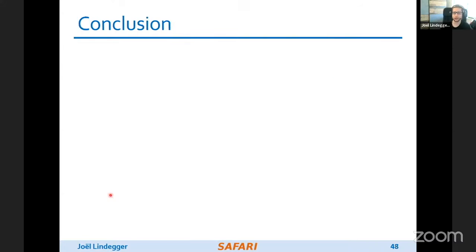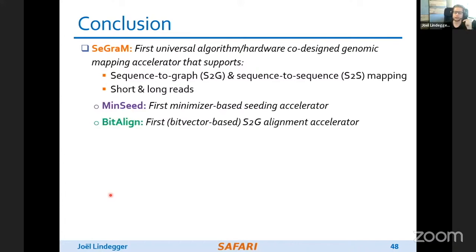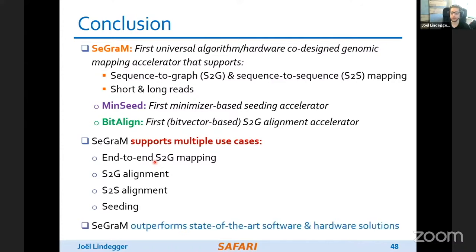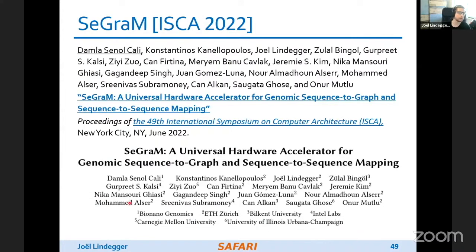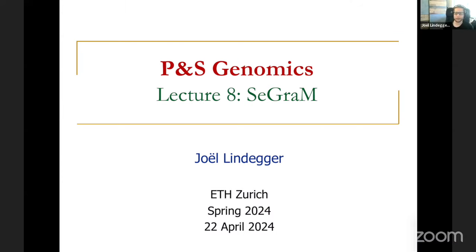In conclusion, SEAGRAM is the first universal algorithm-hardware co-design genomic mapping accelerator that supports both sequence-to-graph and sequence-to-sequence mapping for both short and long reads. It consists of the MinSeed and BitAlign accelerators for seeding and sequence-to-graph alignment respectively, and supports multiple use cases: end-to-end sequence-to-graph mapping, sequence-to-graph alignment, sequence-to-sequence alignment, and seeding alone. SEAGRAM outperformed state-of-the-art software and hardware solutions across these use cases. This paper appeared at ISCA 2022, all code is open source and available on GitHub.